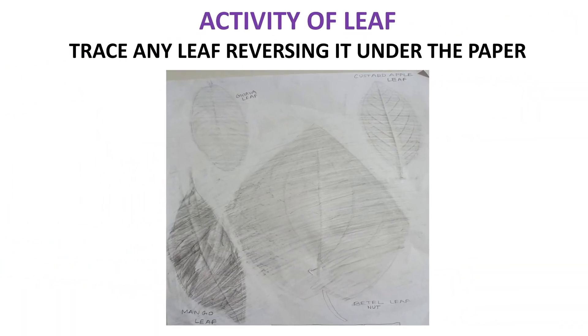Activity of leaf: Trace any leaf by placing it under the paper. You can see the veins, midrib, and petiole clearly.